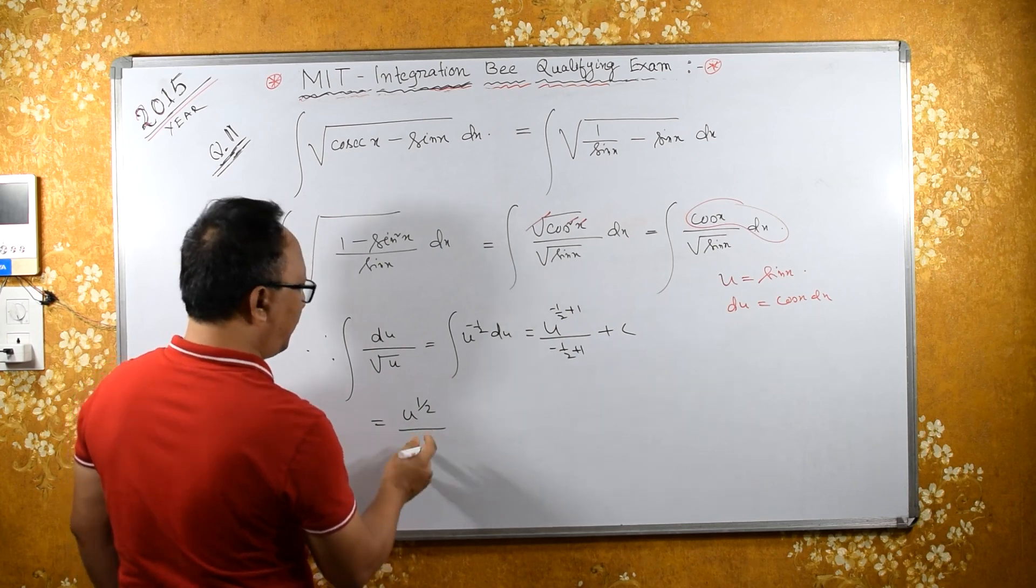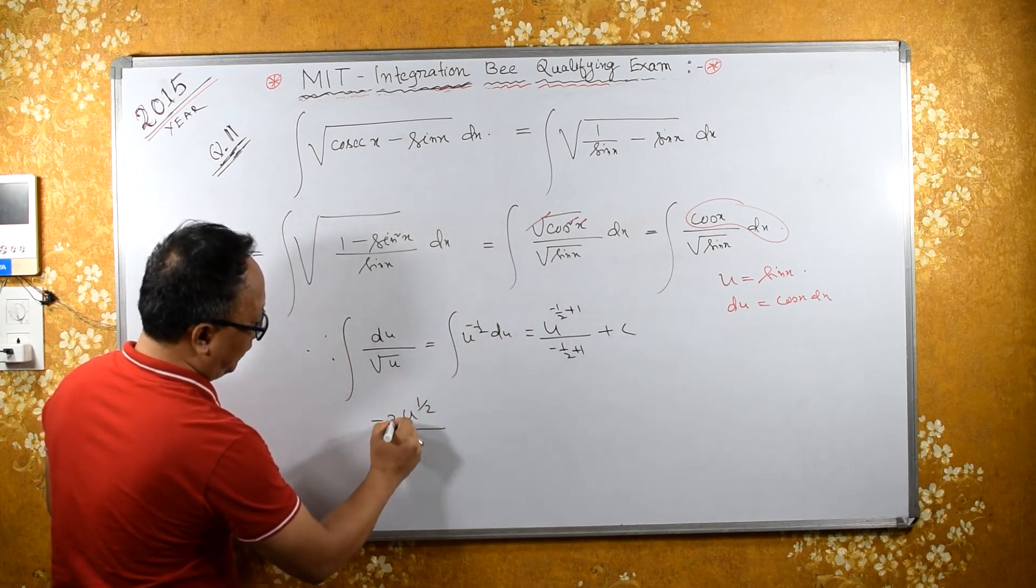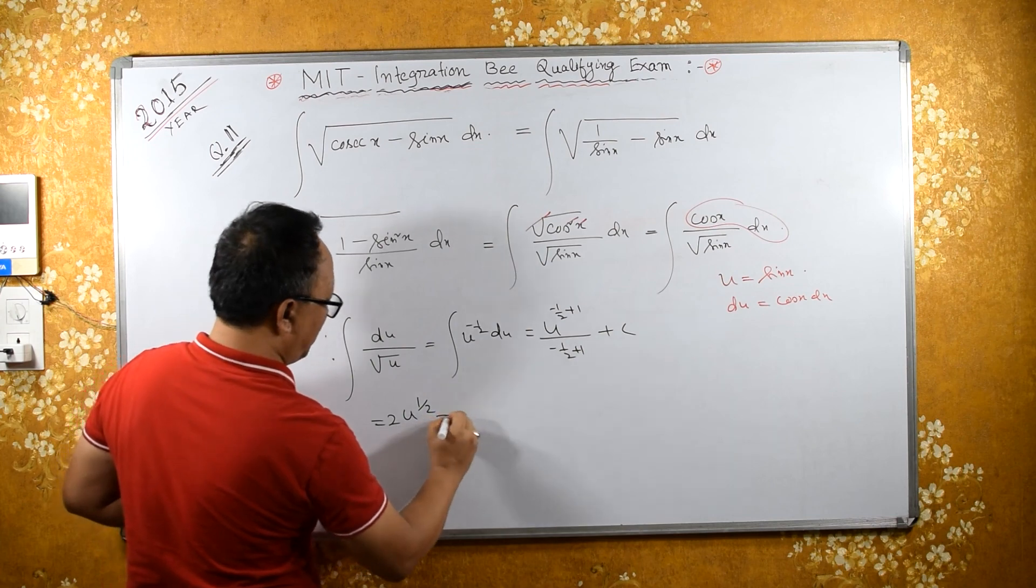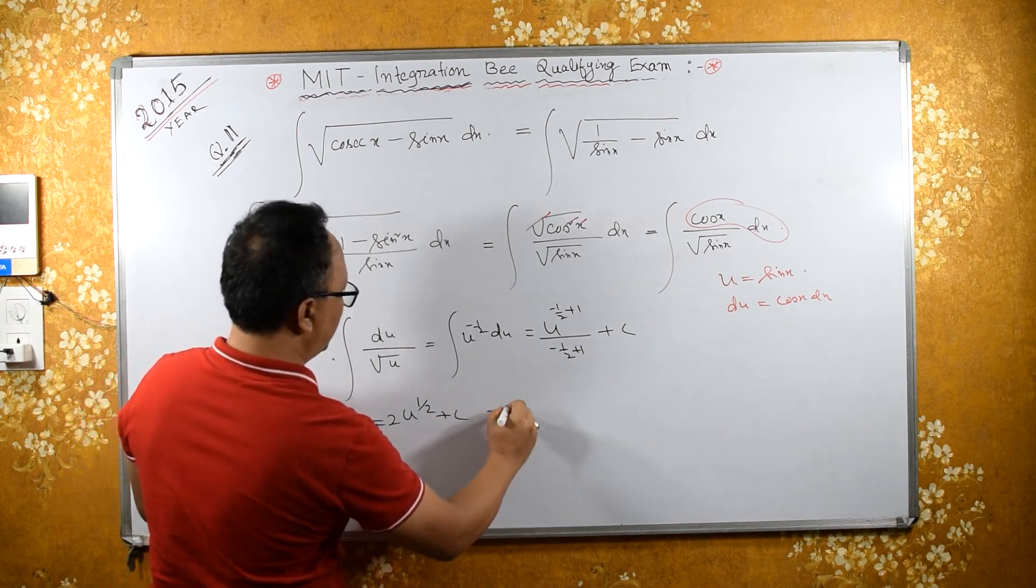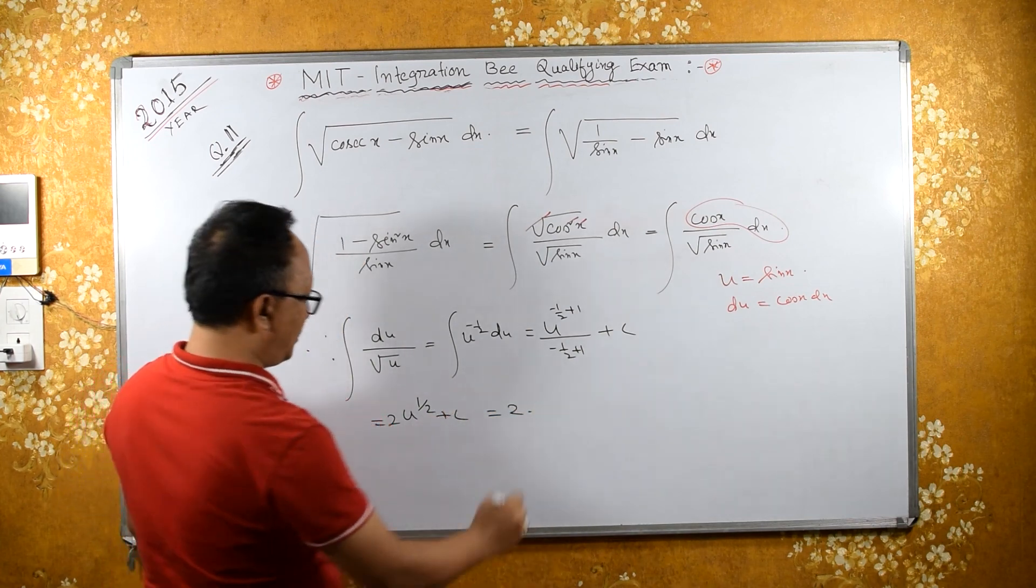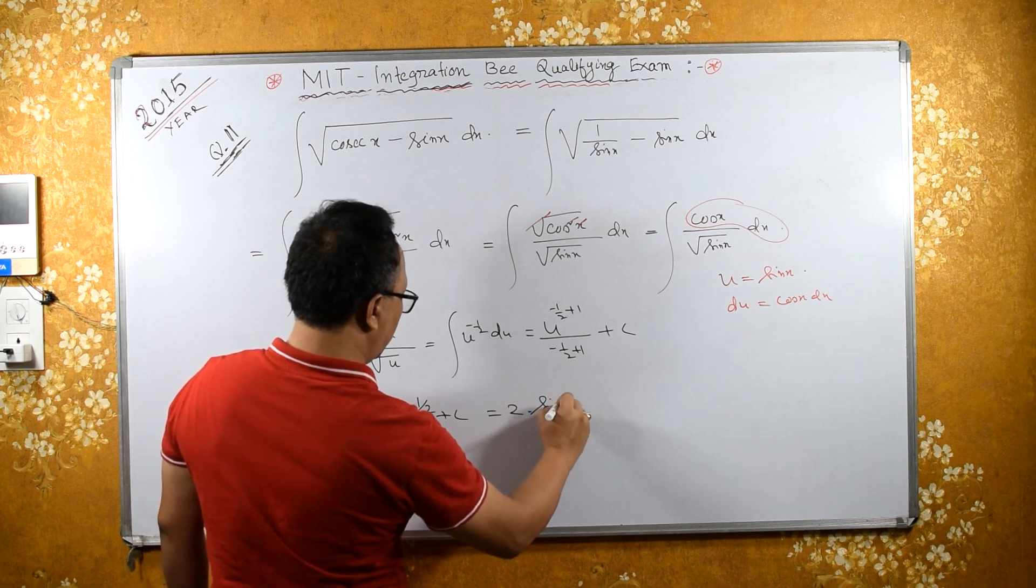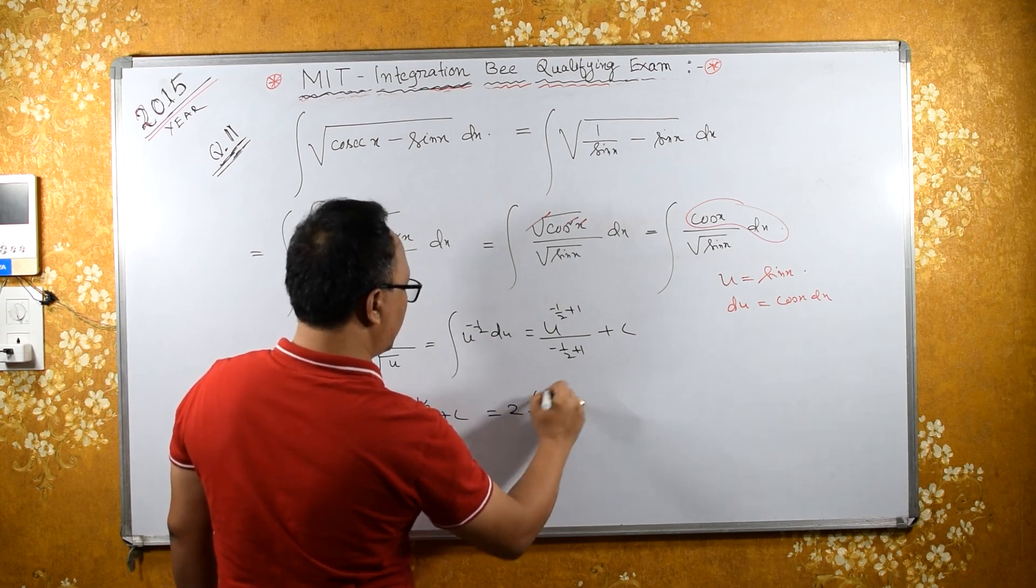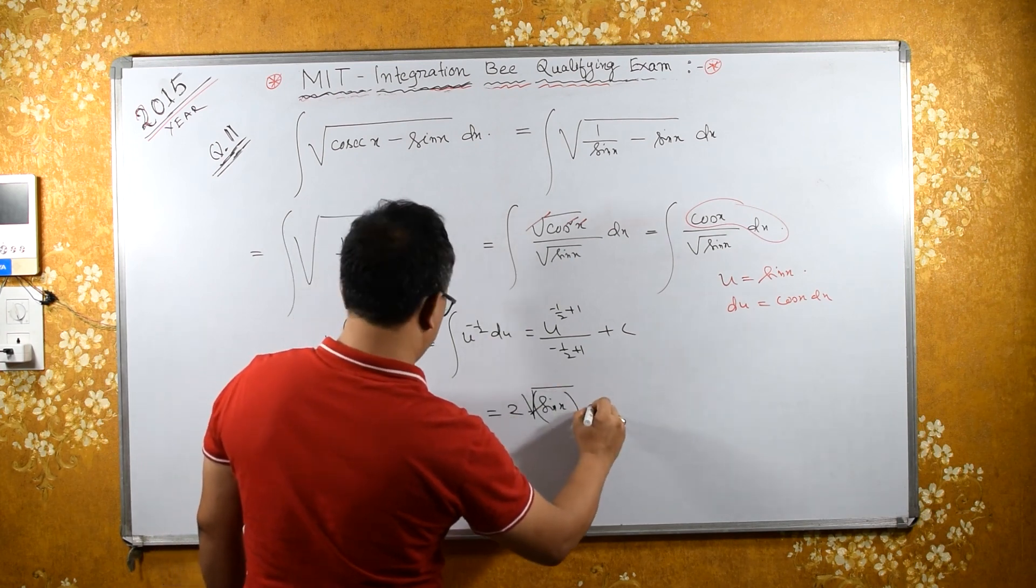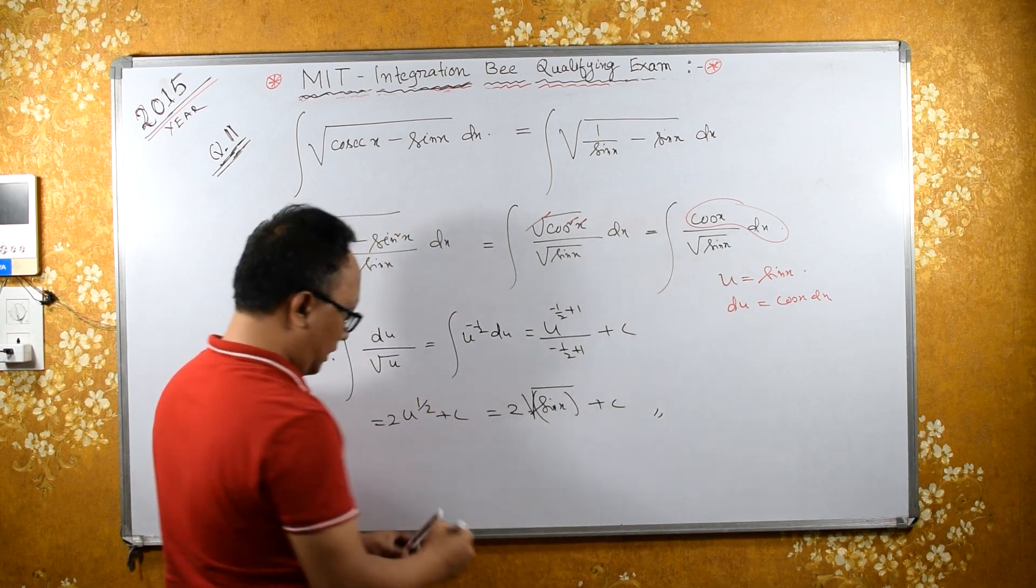If we bring half to numerator it becomes 2 plus c. This equals 2 times what is u - u is sin x raised to half, or you can say square root of sin x plus c. This is the required answer.